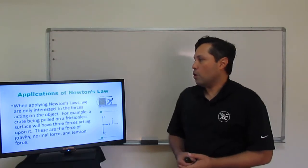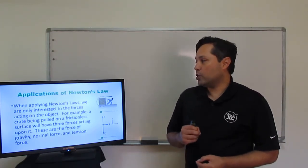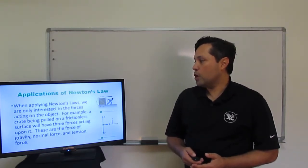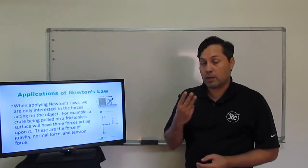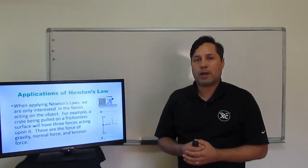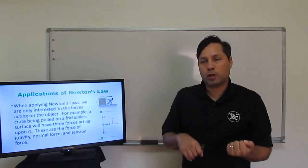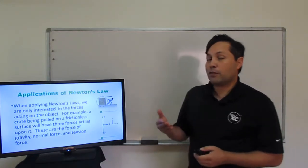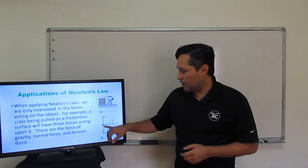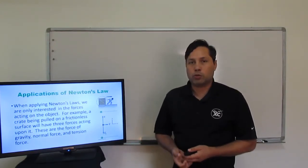Applications of Newton's Third Law. When applying Newton's Law, we are only interested in the forces acting on the object. For example, a crate being pulled on a frictionless surface will have three forces acting on it: force of gravity, force normal opposing force of gravity, and force tension from the person pulling on that crate. Since it's frictionless, we have no force of friction. Here's a free-body diagram showing force gravity, force normal, and force tension.